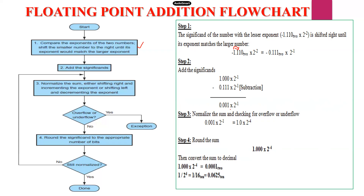Perform the subtraction: 1.000 minus 0.111. Starting from the rightmost bit: 0 − 1, borrow required, treated as 2 − 1 = 1; next bit borrows propagate similarly giving 0; then 0; the leading 0 − 0 = 0. The result is 0.001 × 2^−1. The significands have been added.